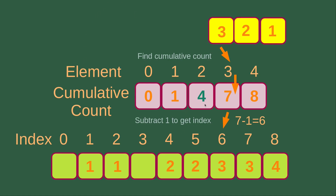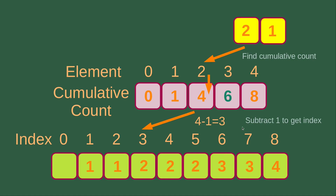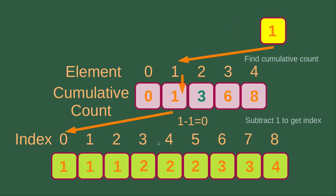Then I put another element from the unsorted list, which is number 3. For number 3, the cumulative count is 7, and I subtract 1 from 7 to get 6. So the correct position of this element is index 6. After putting the element correctly, the cumulative count is updated to 6. Then I handle the eighth element of the unsorted list, which is 2. For number 2, the cumulative count is 4, and I subtract 1 from 4 to get the index position. So this element is put to index number 3 of the final answer, and the cumulative count is updated from 4 to 3.